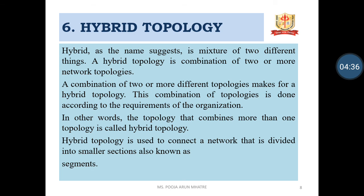The next topology is Hybrid Topology. As the name suggests, it is a mixture of two different things. Hybrid topology is a combination of two or more network topologies, making use of two or more basic topologies. There are different ways in which a hybrid network is created. This combination of topologies is done according to the requirement of the organization. Practical networks generally make use of hybrid topology, and many complex networks can be reduced to some form of hybrid topology.